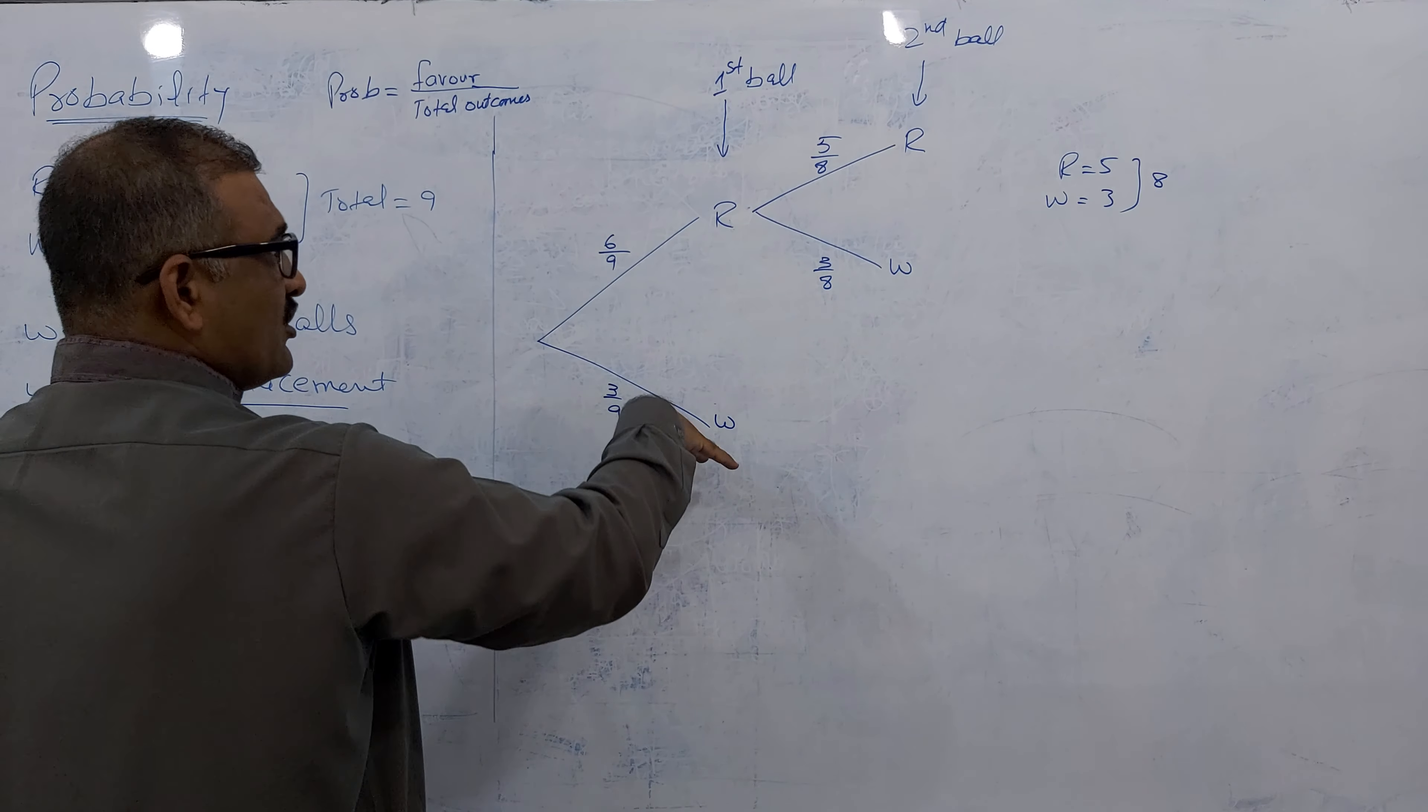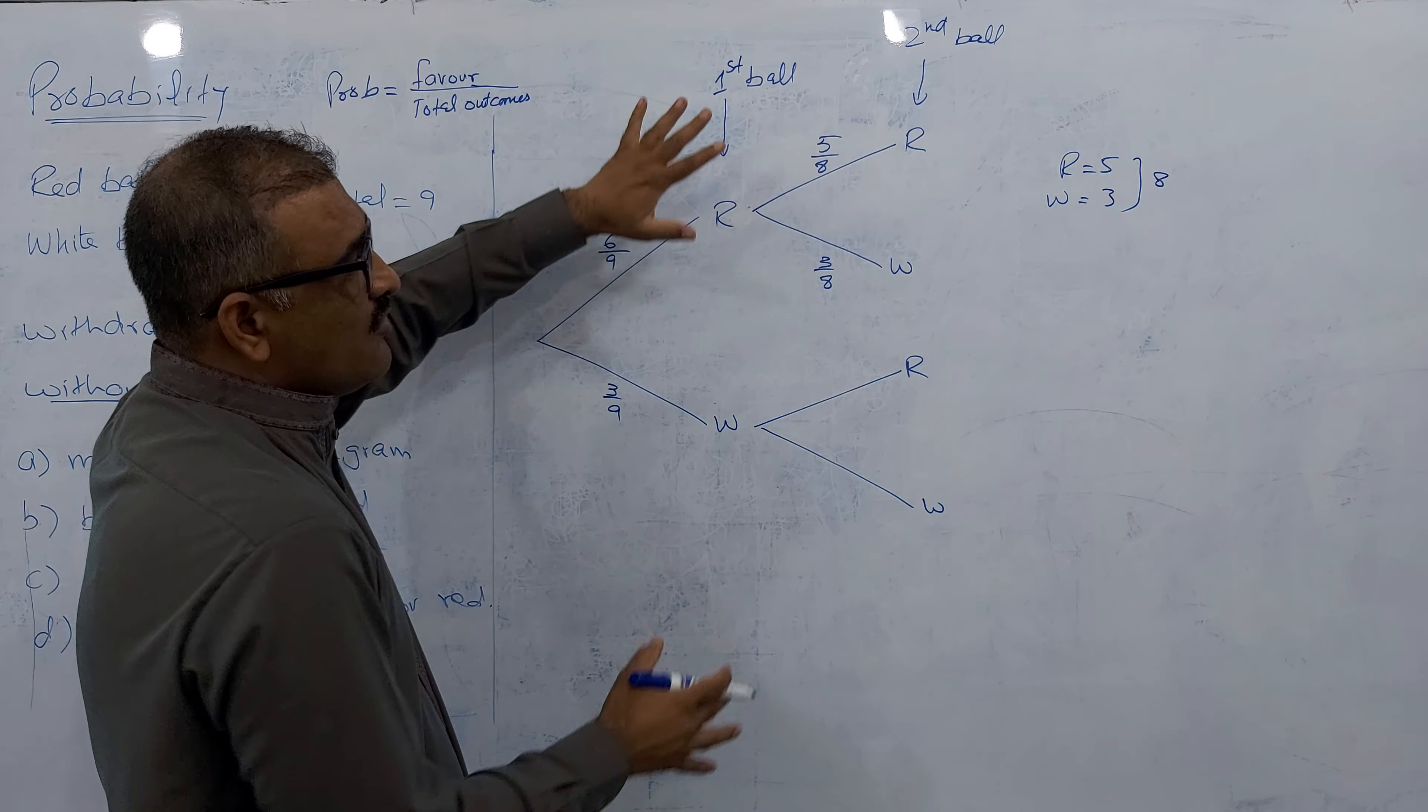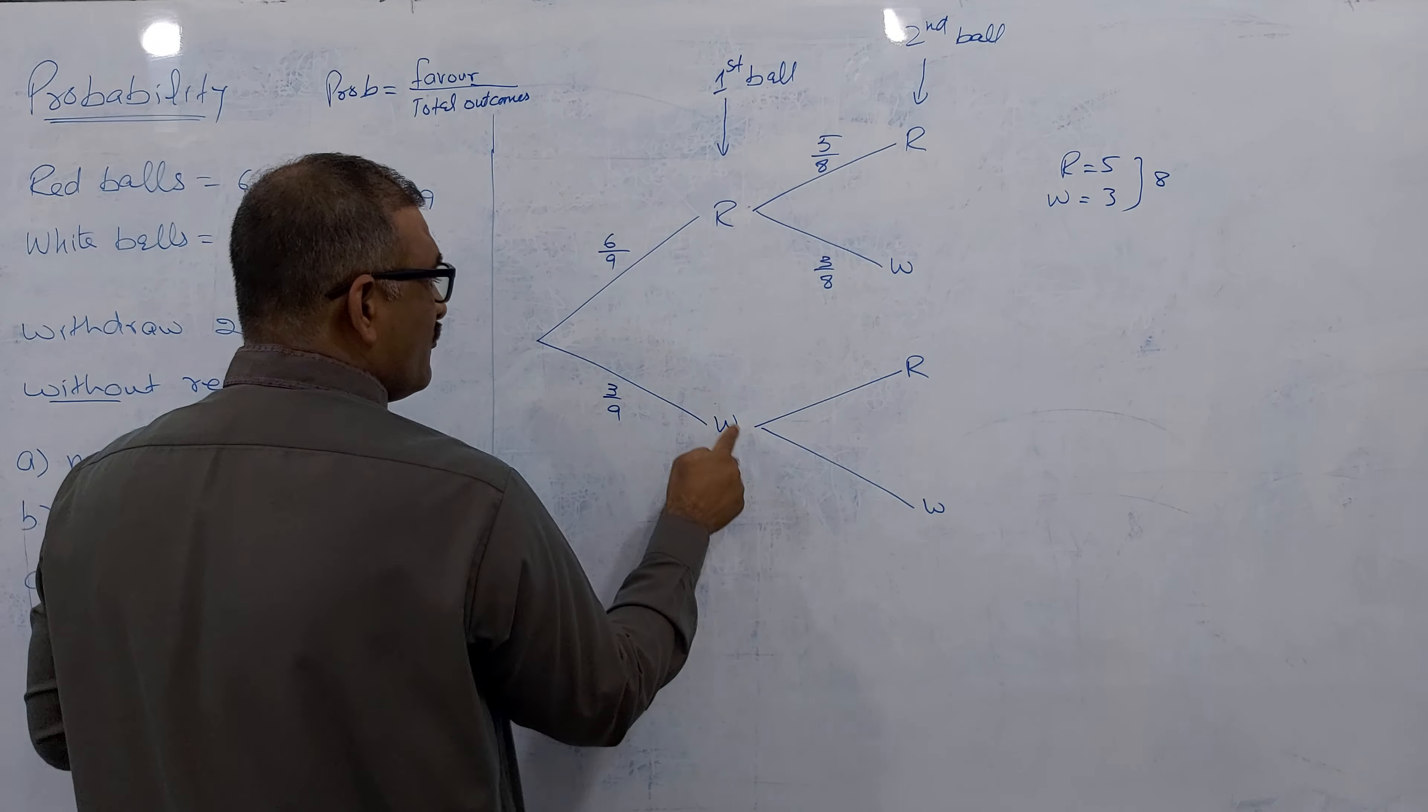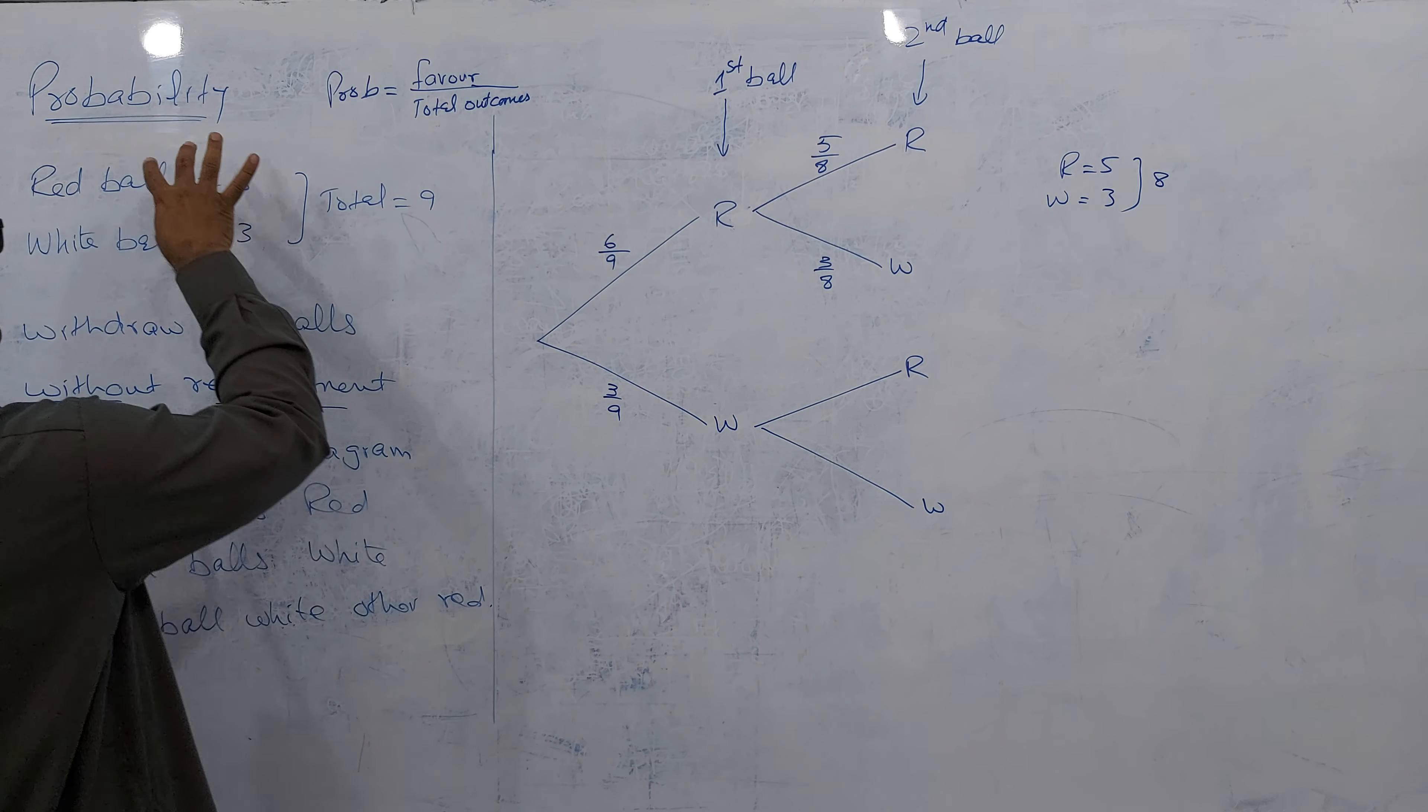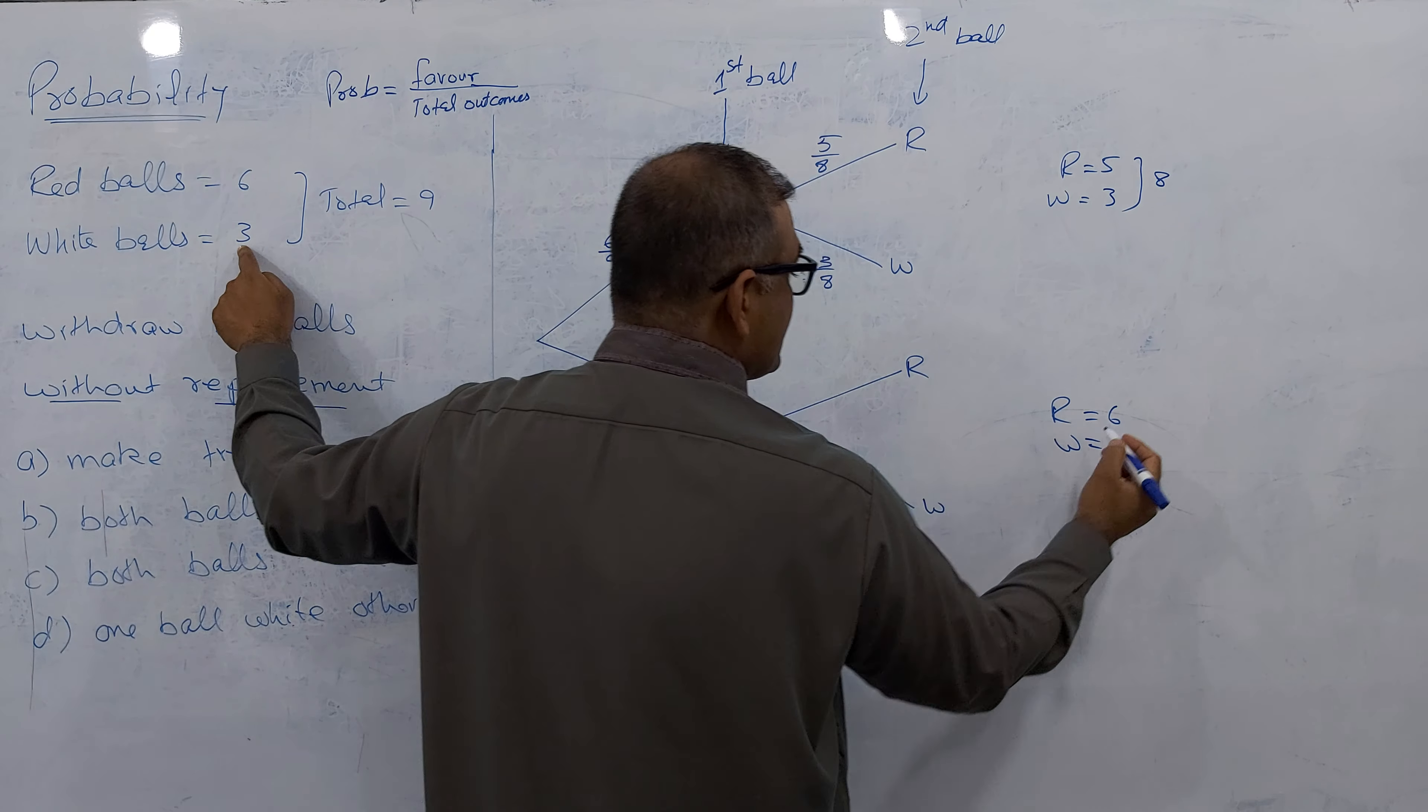Now come on the lower branch. After white, again two chances: red and white. Forget this branch now. For a while, concentrate. First ball white out. There are red 6 and white 3. Let's say you took one white ball out. Out of 3, white left here is 2.